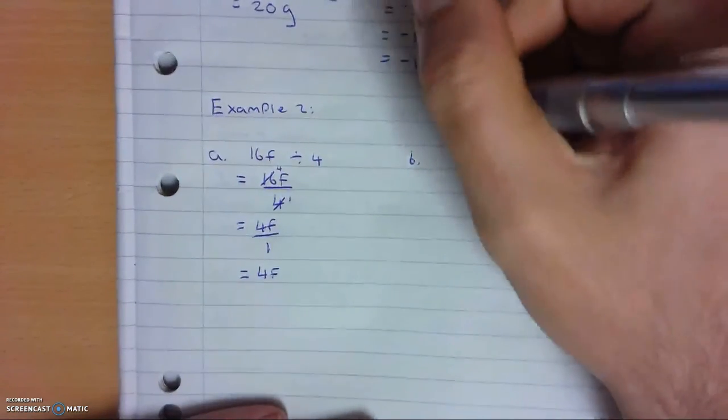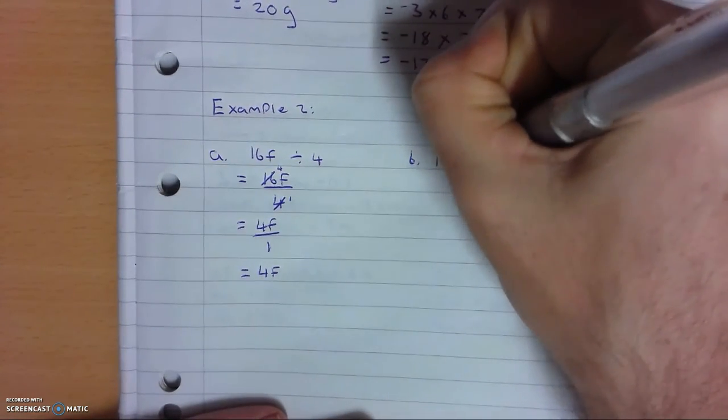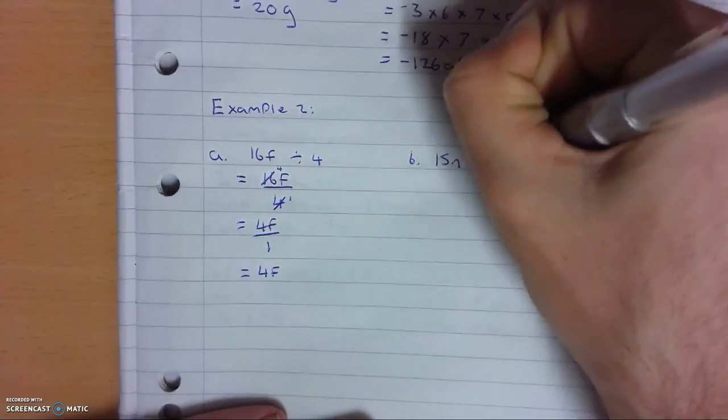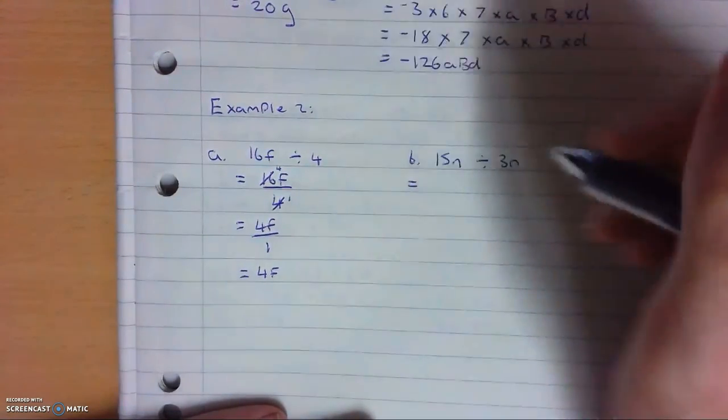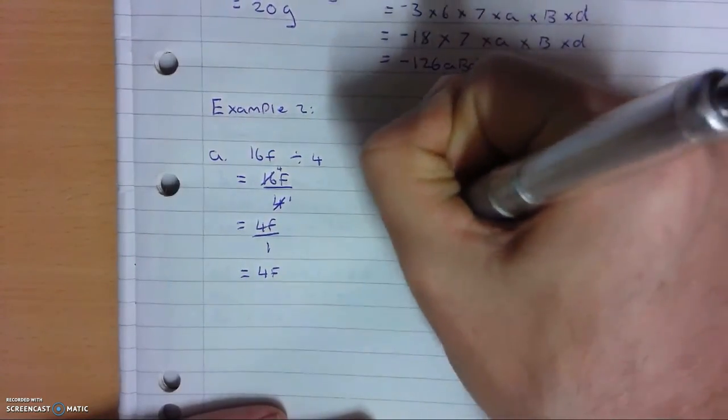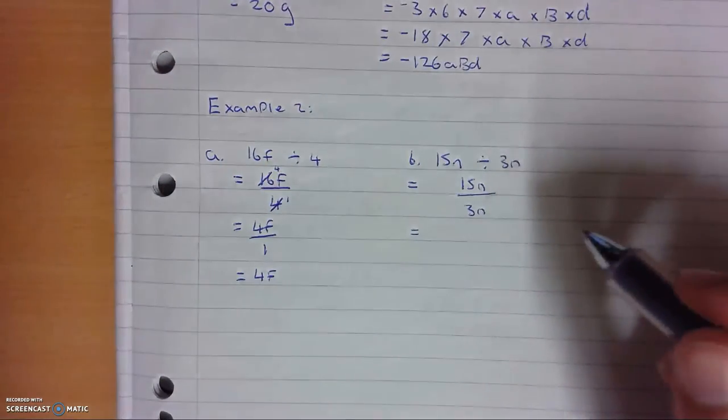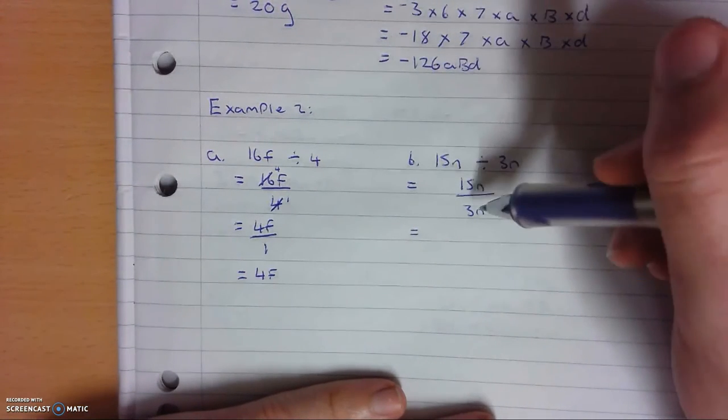Now if I do 15n divided by 3n, we write in fraction form. So 15n over 3n. And now what we do is we cancel out. So what is the highest common factor that will fit into 3 and 15 evenly? That would be 3.